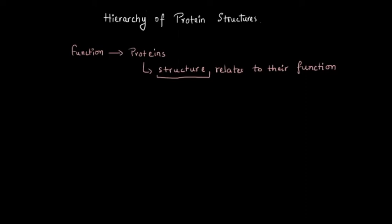Proteins can have different hierarchies, or different kinds of stages where they're folded into various kinds of structures. We know that proteins are made up of amino acids, where the amino acids are joined together by peptide linkage. The linear form — only the sequence, the linear sequence of amino acids — that is the polypeptide chain. This is called the primary structure, or one-degree structure, of the protein.